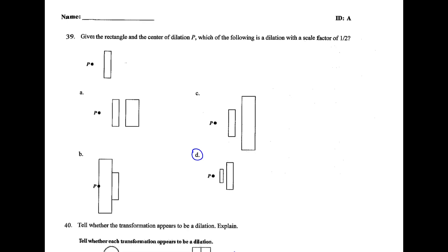For 39, the dilation means the shape stays the same. It just gets bigger or smaller. That's why D is the right answer.